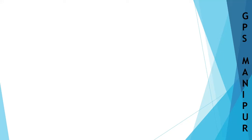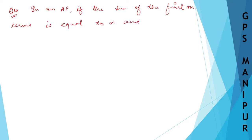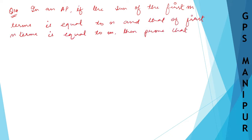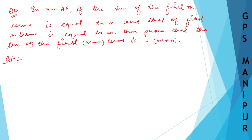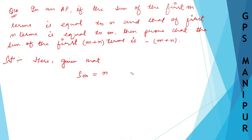We are doing Exercise 6.2, Question 14. The question says: in an AP, if the sum of the first m terms is equal to n, and the sum of the first n terms is equal to m.